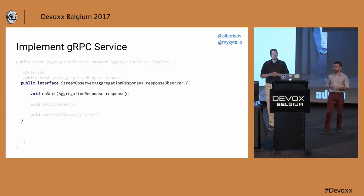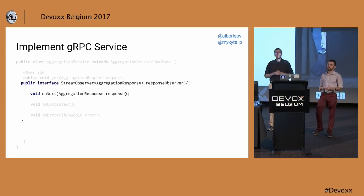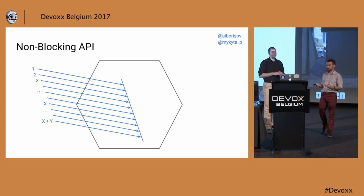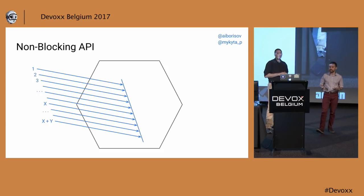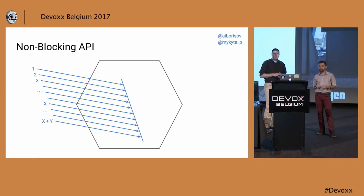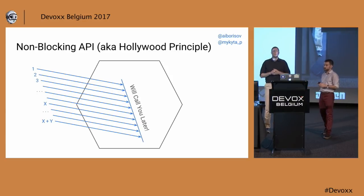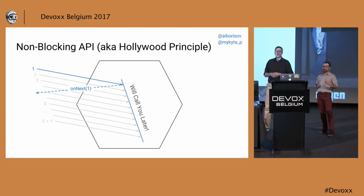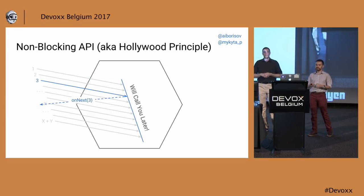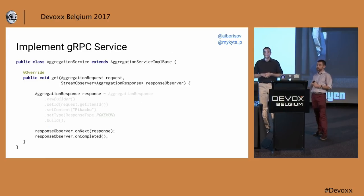StreamObserver is one of the key interfaces in gRPC. It has a method onNext. When we want to send a response to our client, we call onNext with the response. When our RPC method is called, we don't block a thread and don't return anything right away — now we can handle more requests than we have threads in our pool. When we have a result, we just call onNext passing our result to the client. This approach is called the Hollywood Principle: don't call us, we'll call you. When the result is ready, we call the client using the provided onNext method.